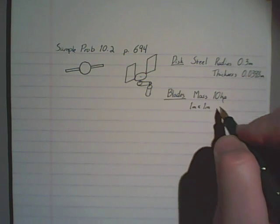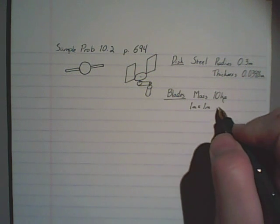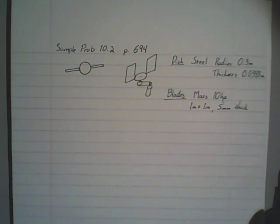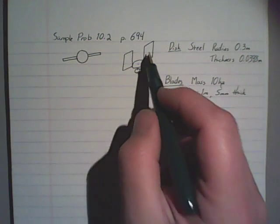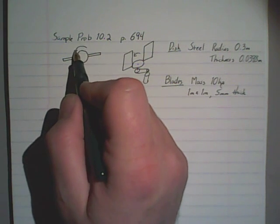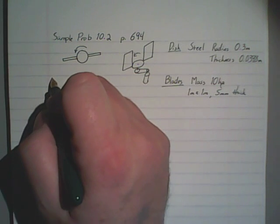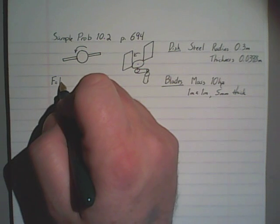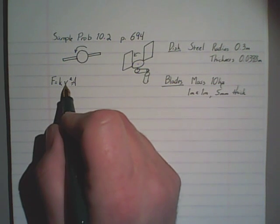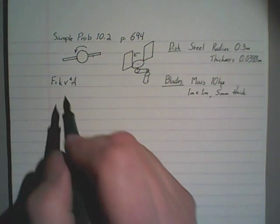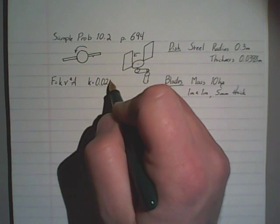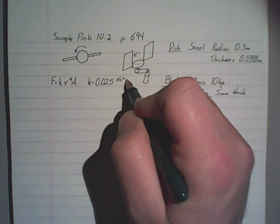The two blades that are mounted on it have a mass of 10 kilograms each. They are 1 meter square, so 1 meter by 1 meter, and they each have a thickness of 5 millimeters. Now we're also told that there's an air resistance that acts on these two fan blades as this whole thing spins around. That air resistance can be modeled with the equation F is equal to KV squared A, where A is the area of the blade, V is a linear velocity at the center of the blade, and K is a constant. That constant K is given as 0.025 newton seconds squared per meter to the fourth.